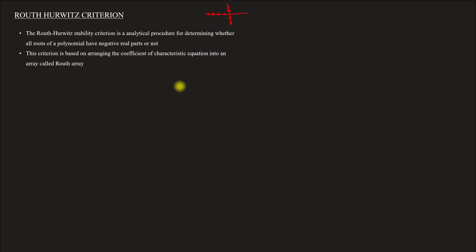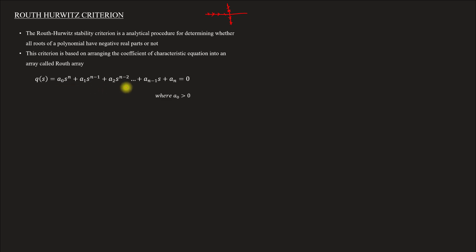Suppose the system has a characteristic equation — a general equation where a0 is greater than 0. We have to make the array called the Routh Array.